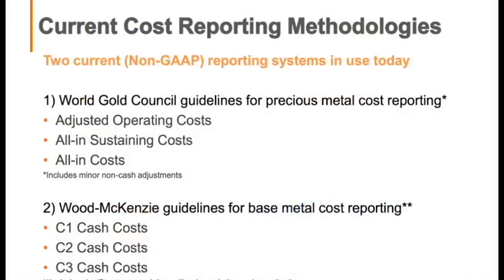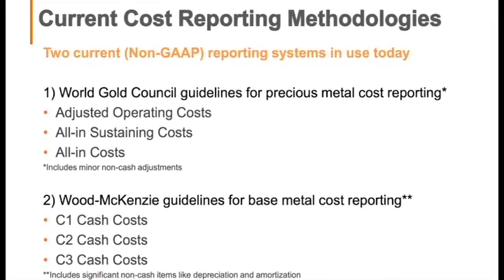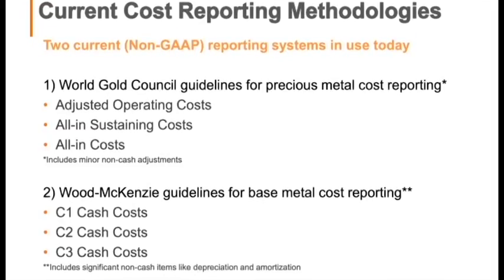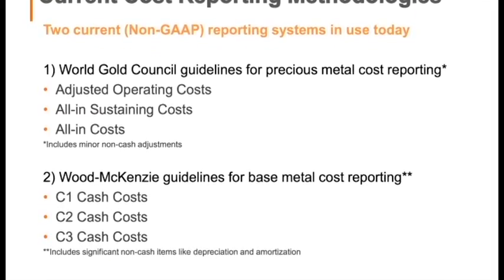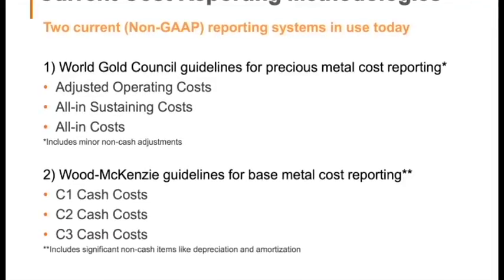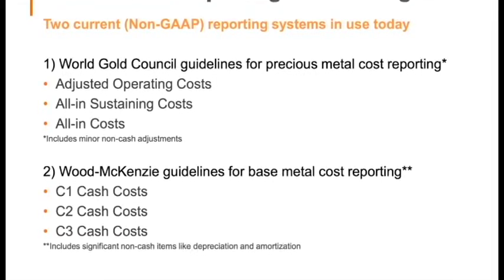Everyone talks about all-in sustaining costs, but there really are two frameworks. The World Gold Council, which is alerted to for precious metal reporting, is composed of three levels: adjusted operating costs, all-in sustaining costs, and all-in costs. Then there are Wood Mackenzie guidelines for base metals — C1, C2, C3. In my personal opinion, because it can contain so many non-cash items like depreciation and amortization, when we're doing a valuation on a cash flow for a project, this really messes things up and confuses people.